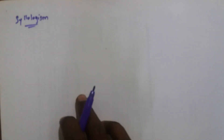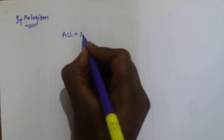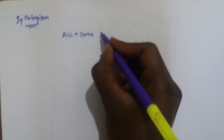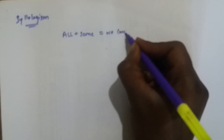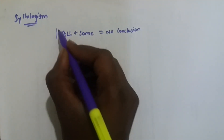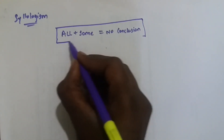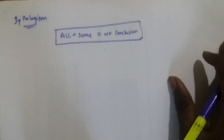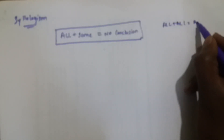Hi friends, now we are going to see problems based on syllogism. Let's see another formula based on syllogism: All plus Some is equal to No Conclusion. In the previous problem we saw All plus All is equal to All, and All plus No is equal to No. Now it's the third formula.